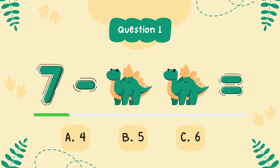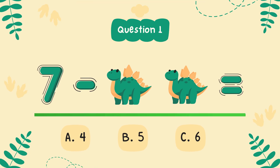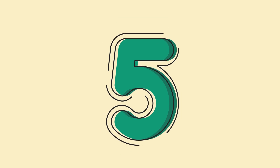What is 7 minus 2? The answer is 5. Great job.